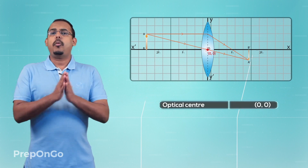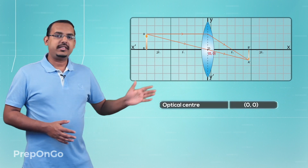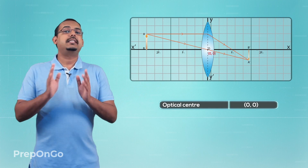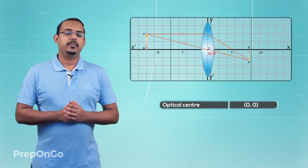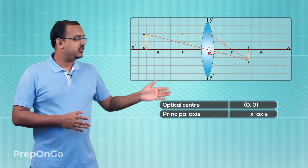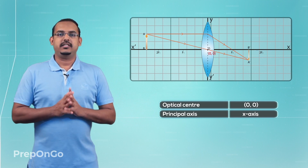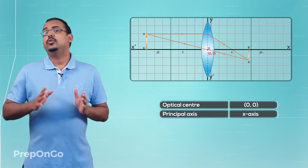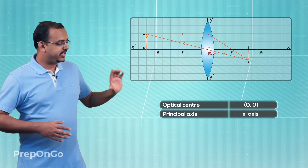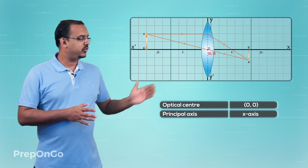So the optical center of the lens that we are using is always coinciding with the origin of the Cartesian plane, which is the point 0,0. Due to this, the principal axis of the lens automatically coincides with the x-axis. Now we know that the object is always placed to the left of the lens, so here if we have an object, we know that we will place the object to the left of the lens.